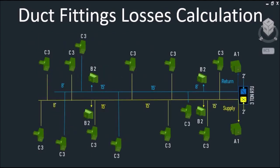The next point we have to consider is to calculate the pressure losses through the duct fittings such as elbows, trunks, branches, and transitions. As you can see, this is a single line duct diagram which tells us the quantities of our fittings.